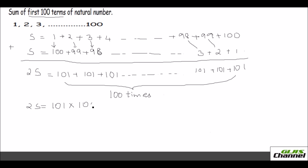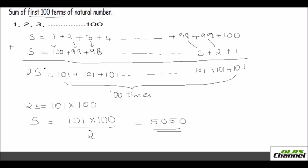Instead of adding 101 one hundred times, we can say 2S equals 101 times 100. So your sum S will be 101 times 100 over 2, which gives you 5050. So adding 1 plus 2 plus 3 all the way to 100 by this easy method gives us the answer 5050.